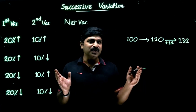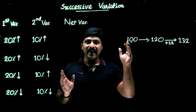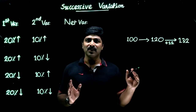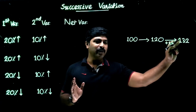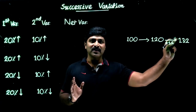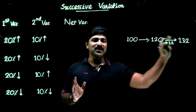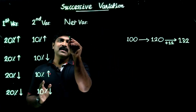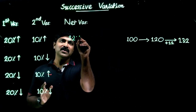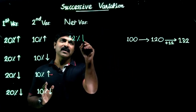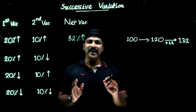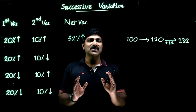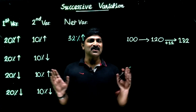Just observe — now 100 has become 132. So what is the net variation here? This is simply 32% increase. We can conclude that the net variation is 32% increase. This is the simple concept of successive variation.